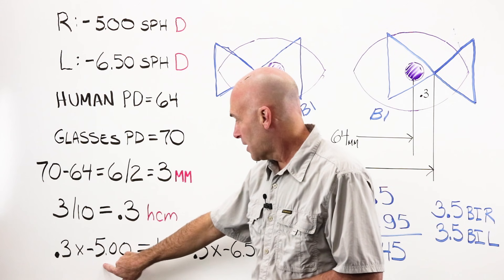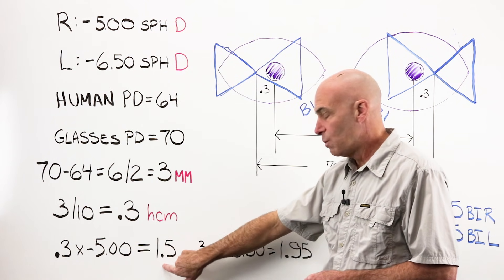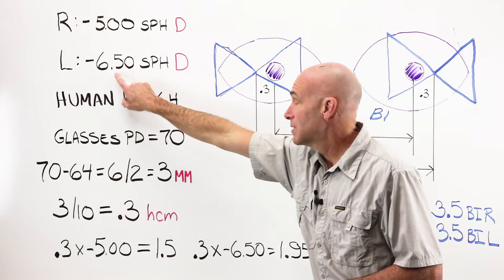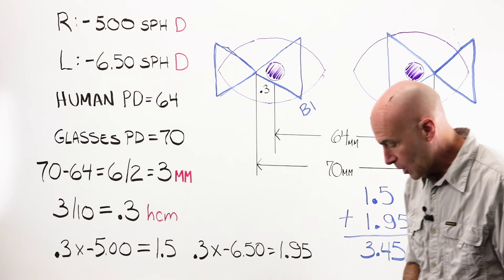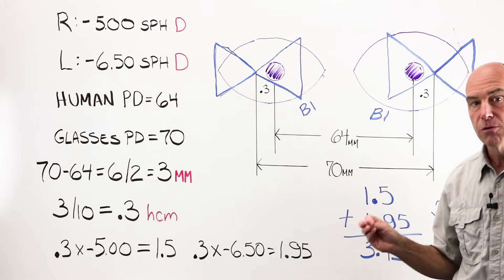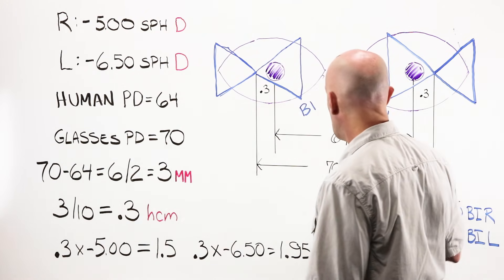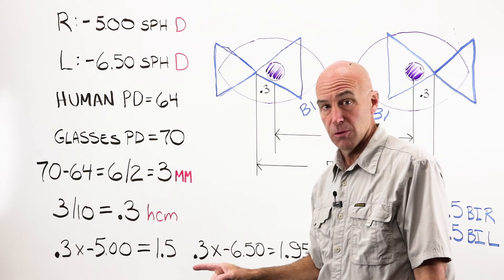Now I can start plugging things in. I get my D's times my HCM. .3 times minus 5, or 5 would give me 1.5. .3 times 6.50 gives me 1.95. These two right here, right now, tell us absolutely nothing. I need to draw this out, figure out what's going on as far as my base direction goes.